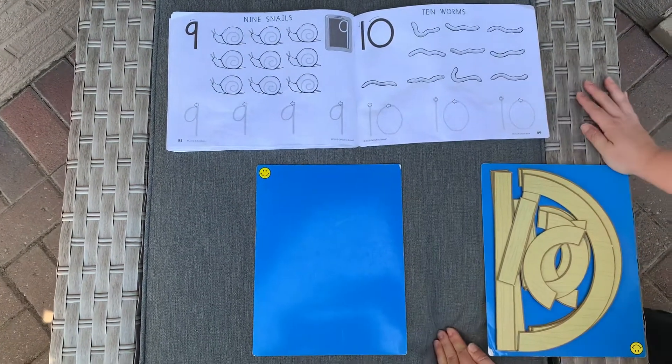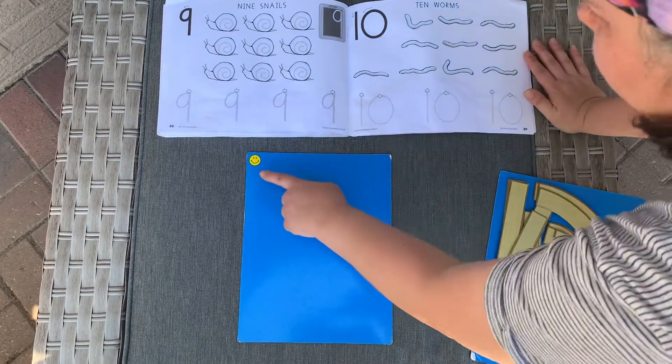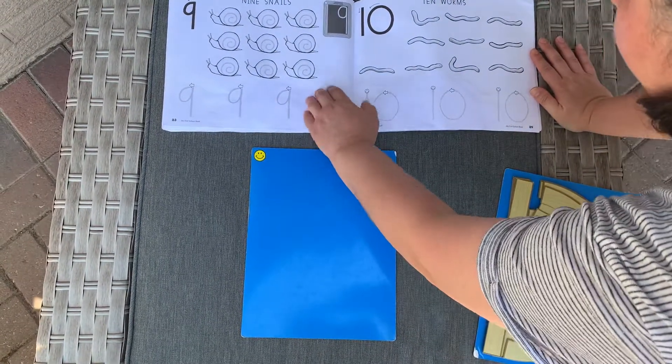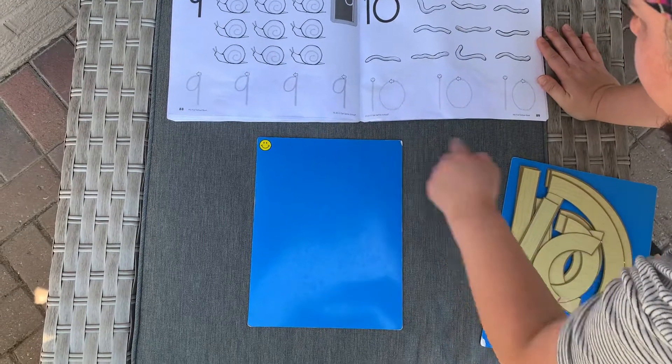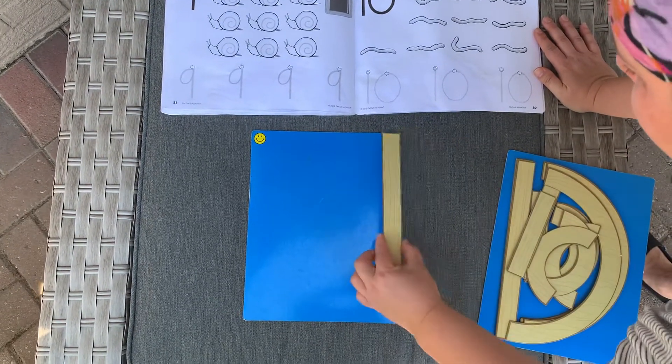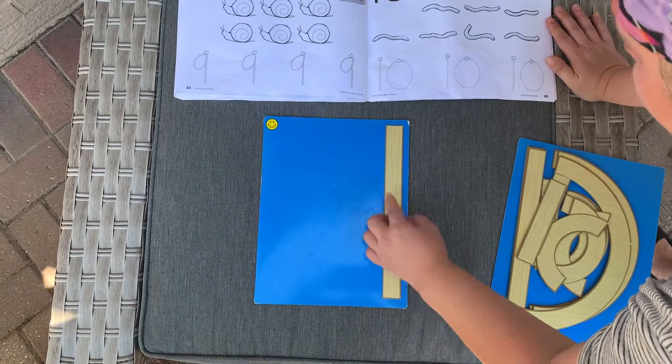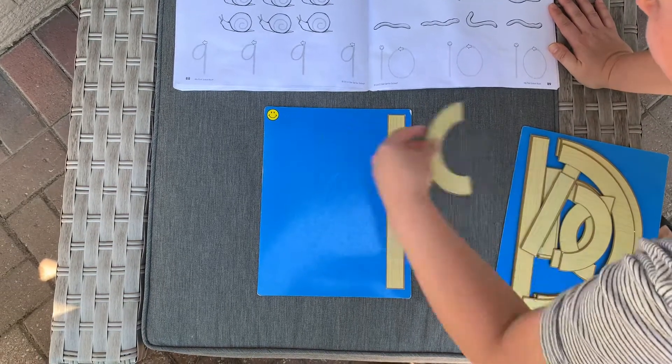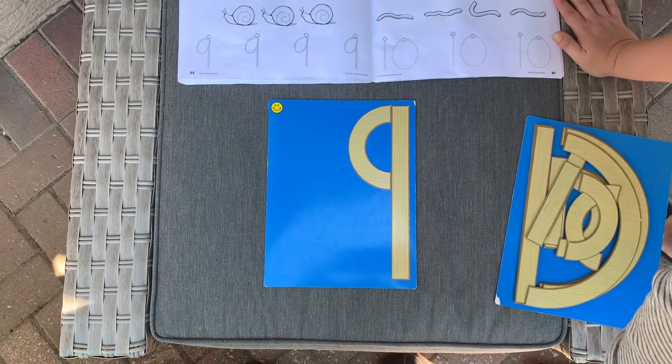Number nine is a number that we do not start at our smiley face. We actually start at the opposite side. You will take a big line down, jump back up and you will put a little curve.